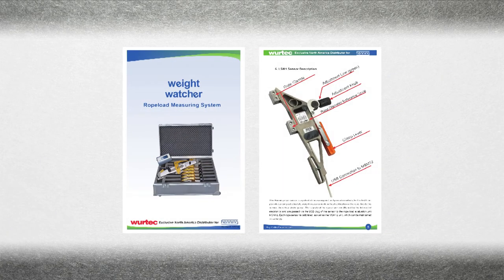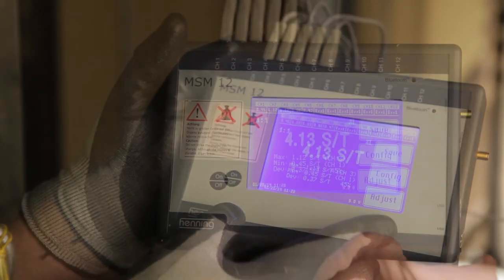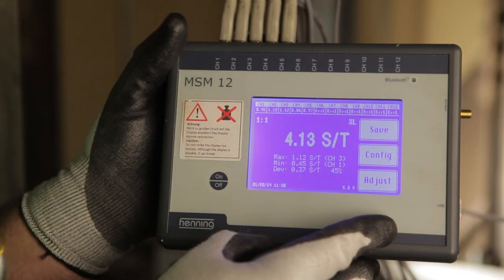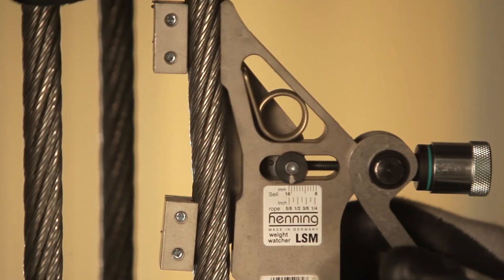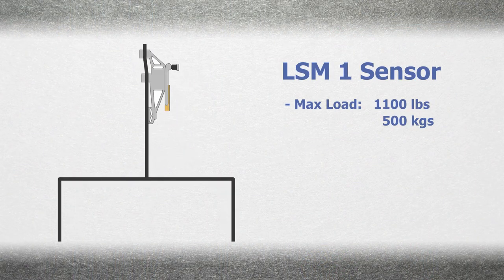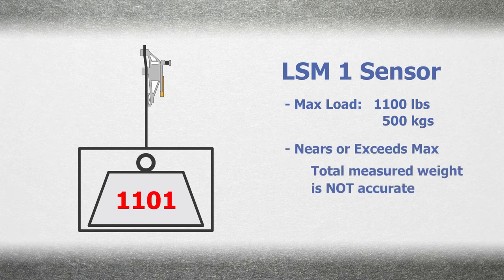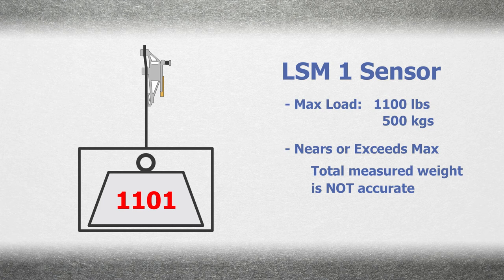For further information, refer to the Mobile Weight Watcher User Manual at www.wurtec.com. Pay attention to the measured weight displayed for each individual sensor. Be sure that the measurement is not greater than the maximum measurable load for the sensor. For example, LSM1 sensors have a maximum measurable load of 1,100 pounds. If the individual sensor weight nears or exceeds 1,100 pounds, the total measured weight of the car will not be accurate.